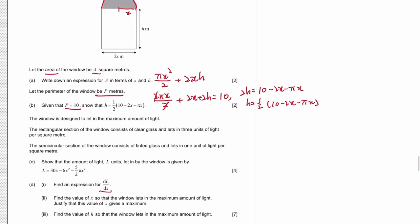Okay, pretty straightforward for now. The window is designed to let in maximum amount of light. The rectangular part let in 3 units of light while the semicircle part let in only 1 unit of light.